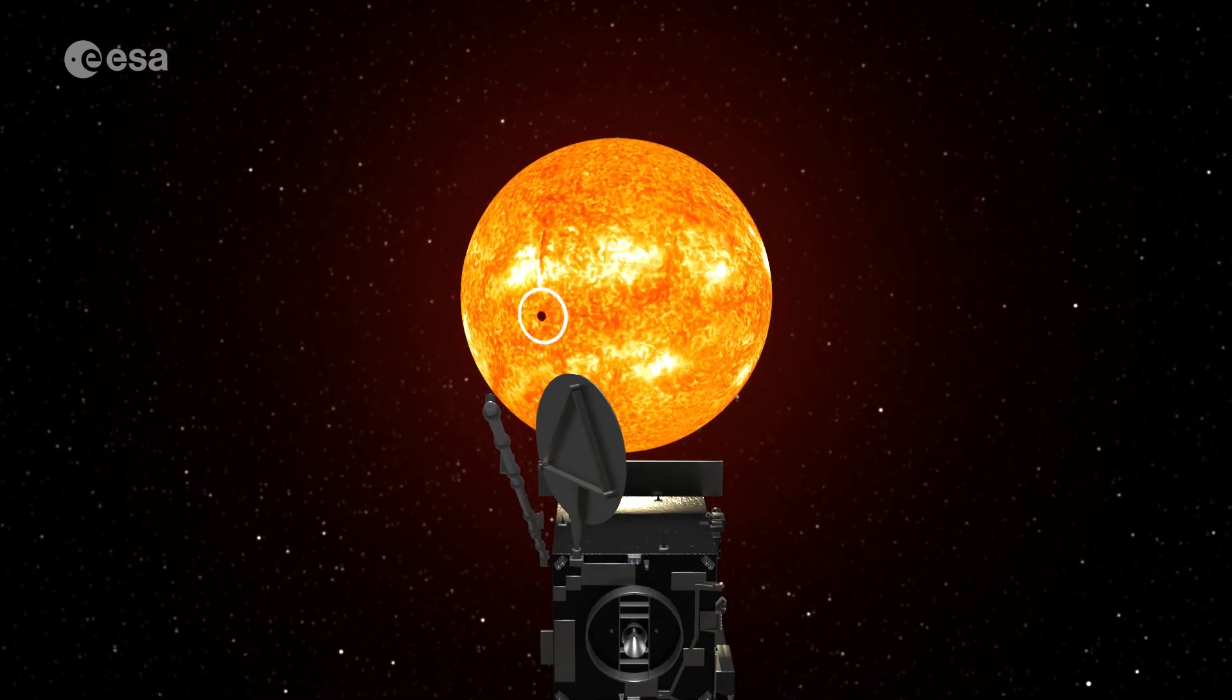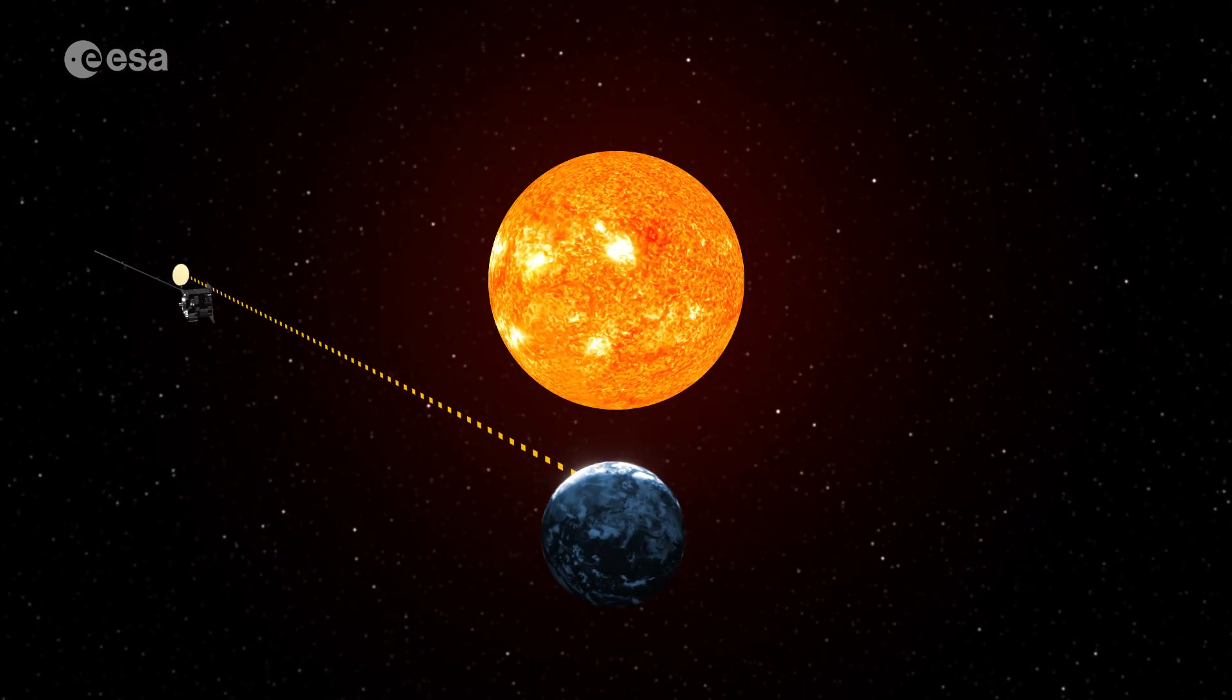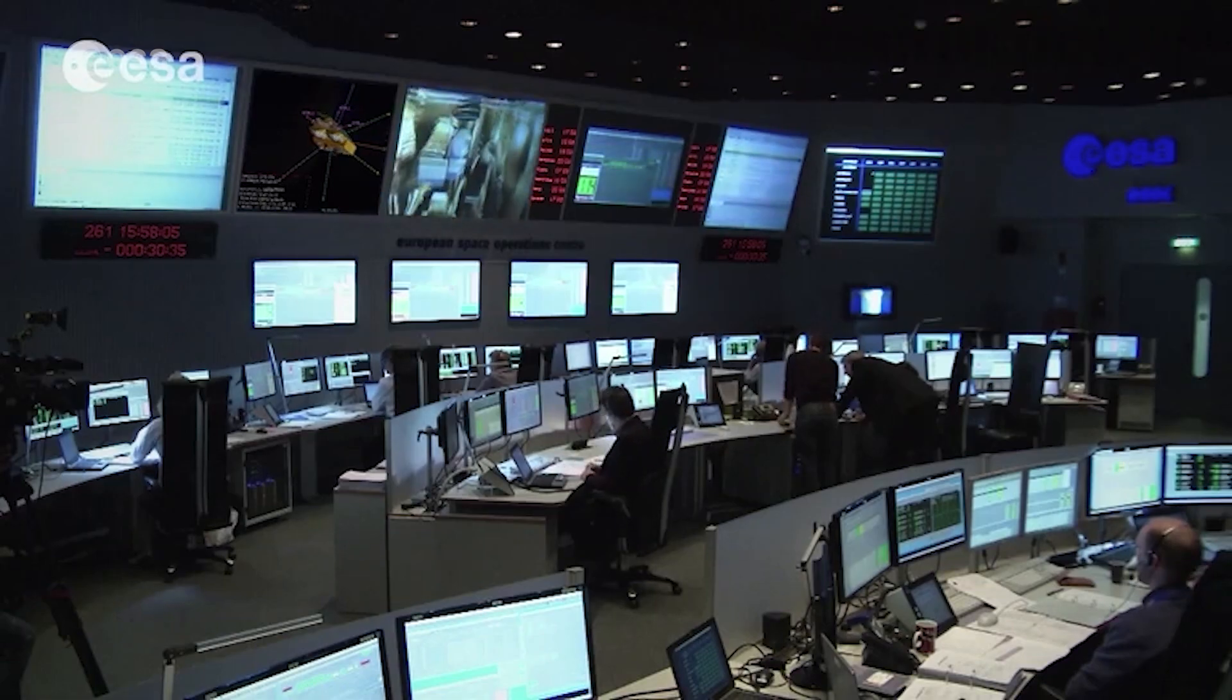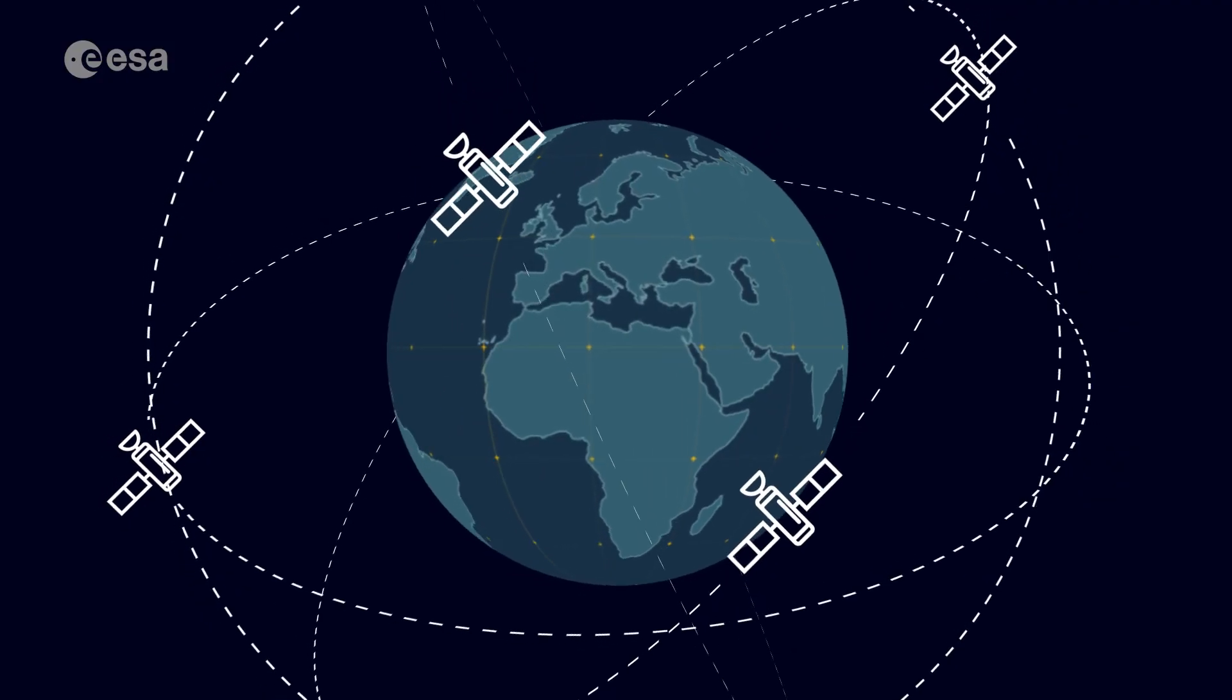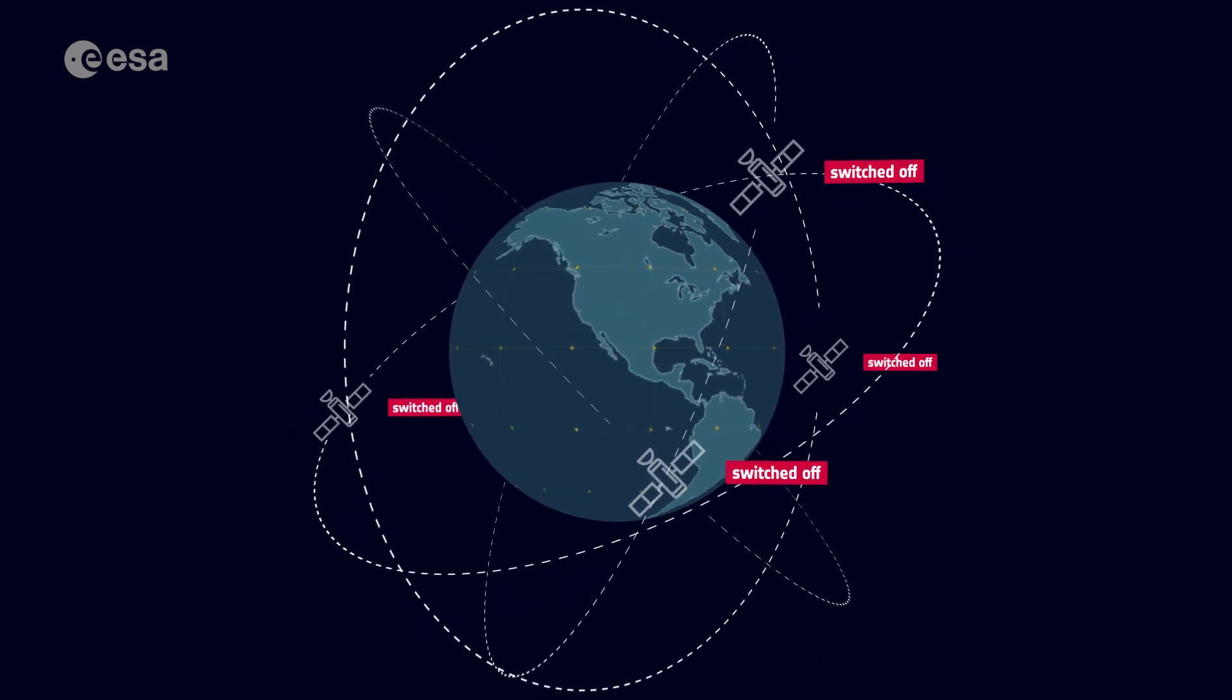ESA Vigil will help spot sources of dangerous solar activity before they rotate into view from Earth, as well as tracking enormous explosions that could severely disrupt satellites in space and infrastructure on the ground, threatening the health of astronauts in space, or, in the future, on the Moon.